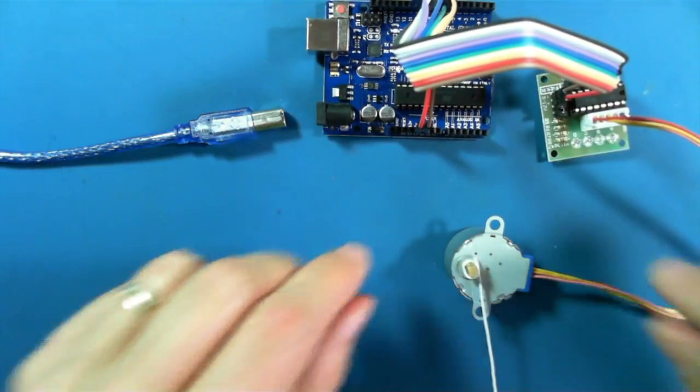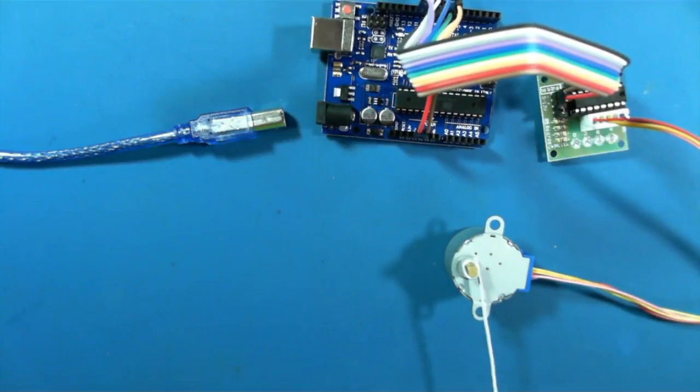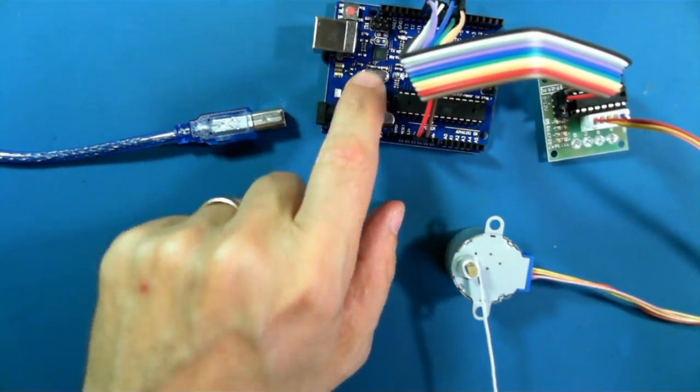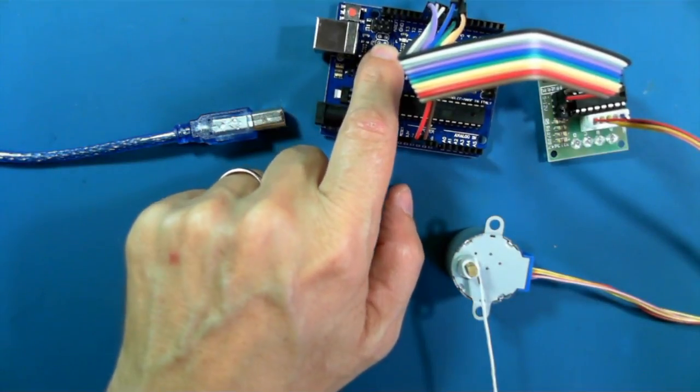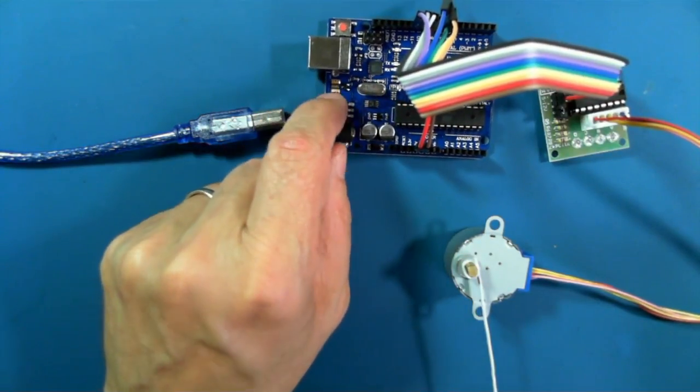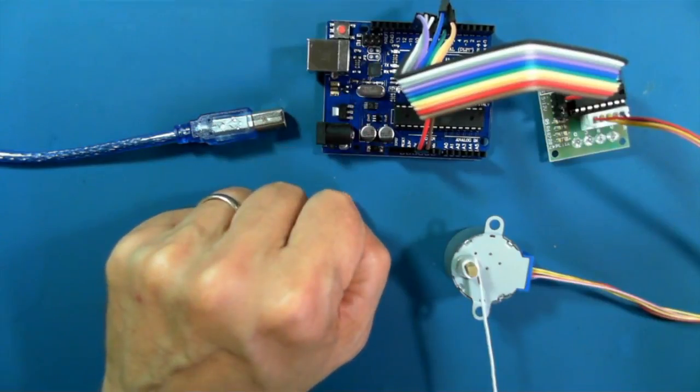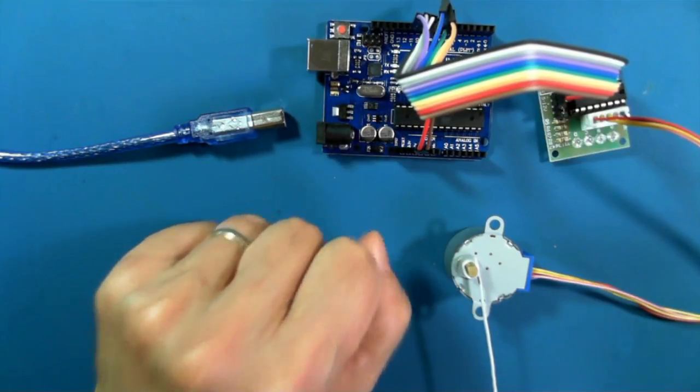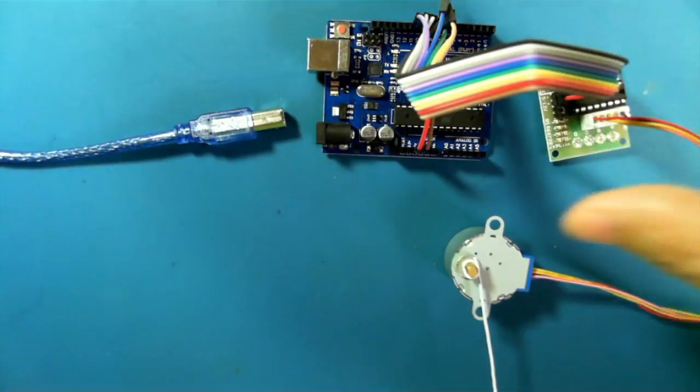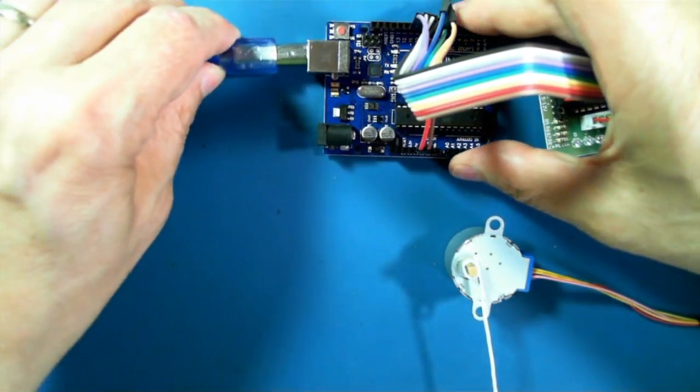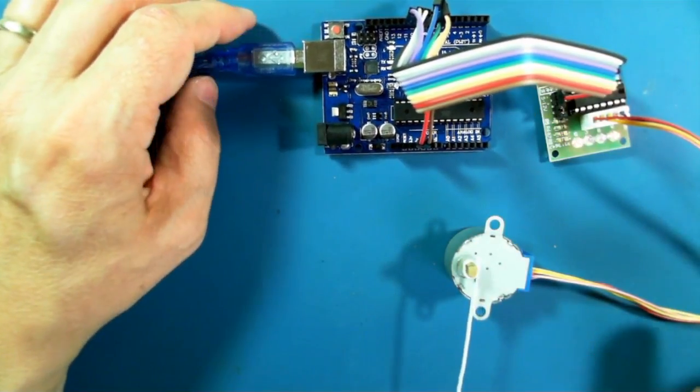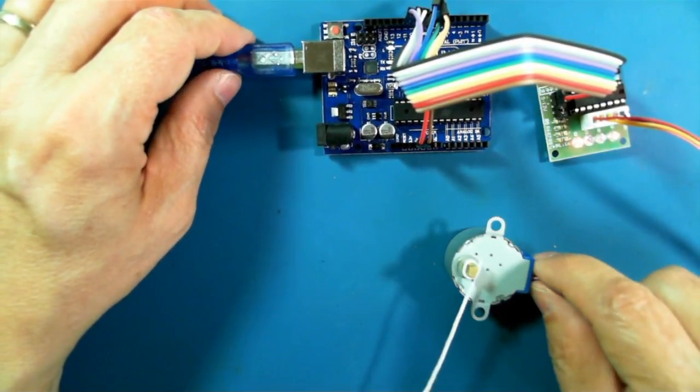Now just so that you know, the Arduino has an internal fuse so that if there's too much current being drawn, the regulator will switch off the power and it will protect the device. So hopefully we haven't broken anything. Here we go. So it is working.